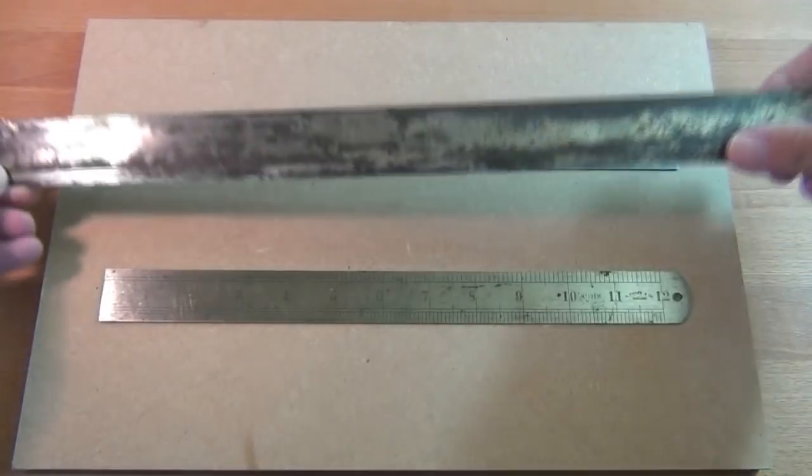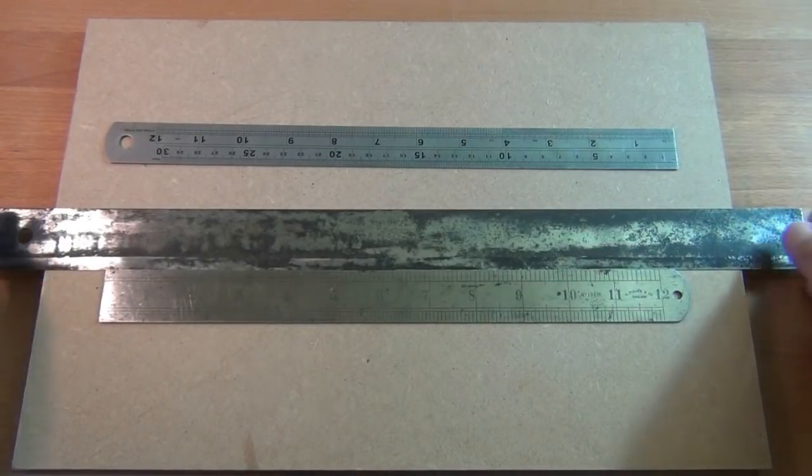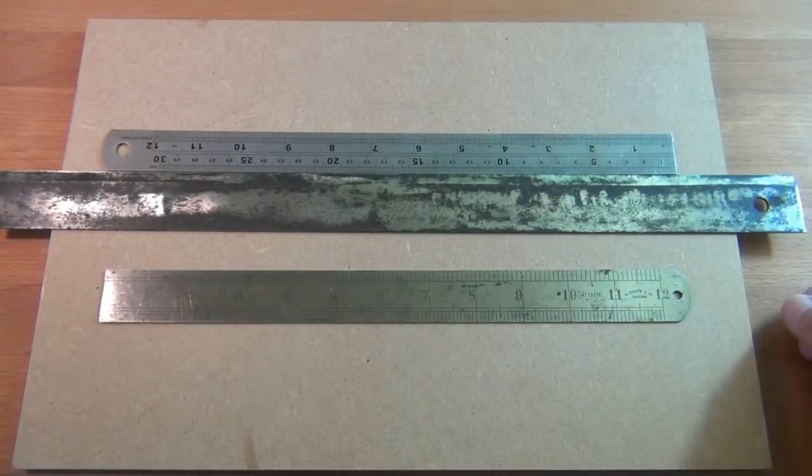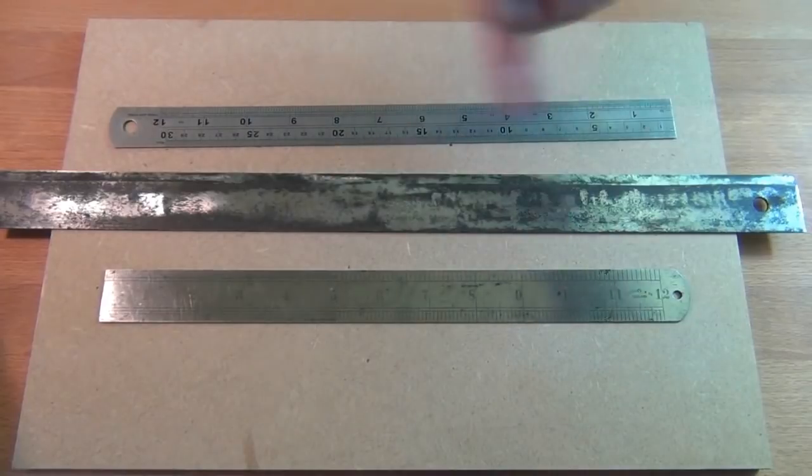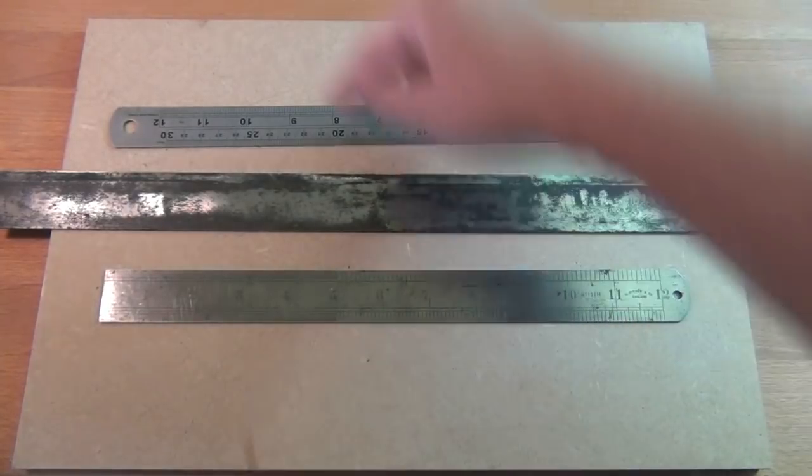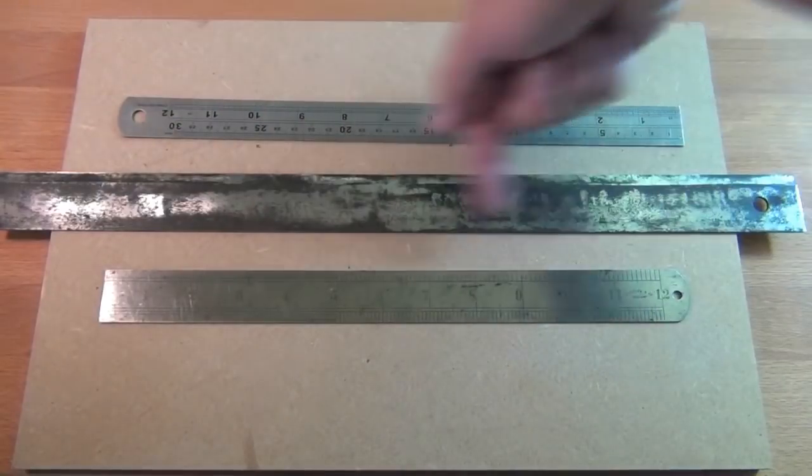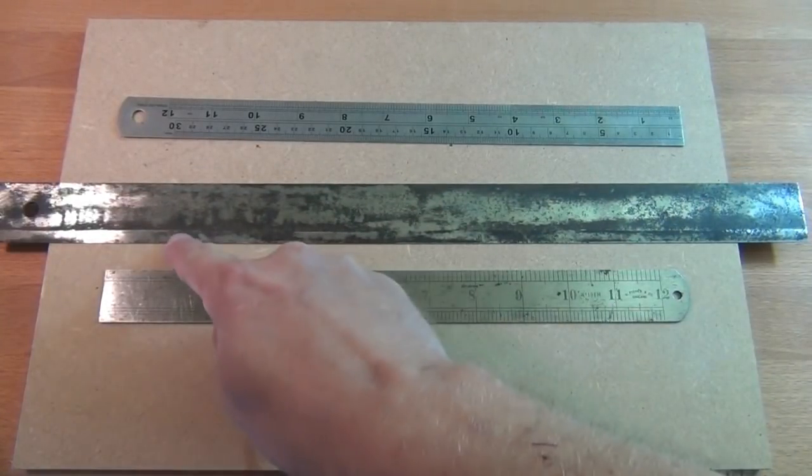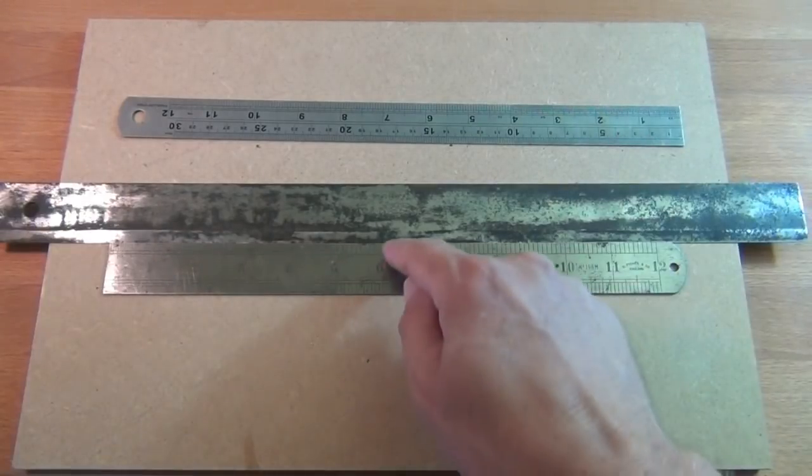However, if the top of this straight edge fits nicely to this steel rule, and it also fits nicely to this steel rule, then our little hypothesis that this rule could be that shape and this rule could be that shape is disproved. Because if this one was that shape, it may well fit against this edge if that edge was also that shape. But if we then put these two edges together, we'd have an edge that was this shape on the straight edge and an edge that was that shape on this rule. If we put them together, we'd see a gap in the middle.